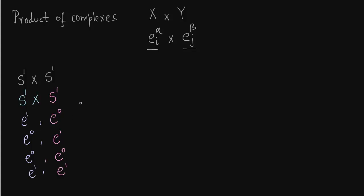Now we add the dimensions. What are the corresponding dimensions? One plus zero is one, zero plus one is one, zero plus zero is zero, and one plus one is two.